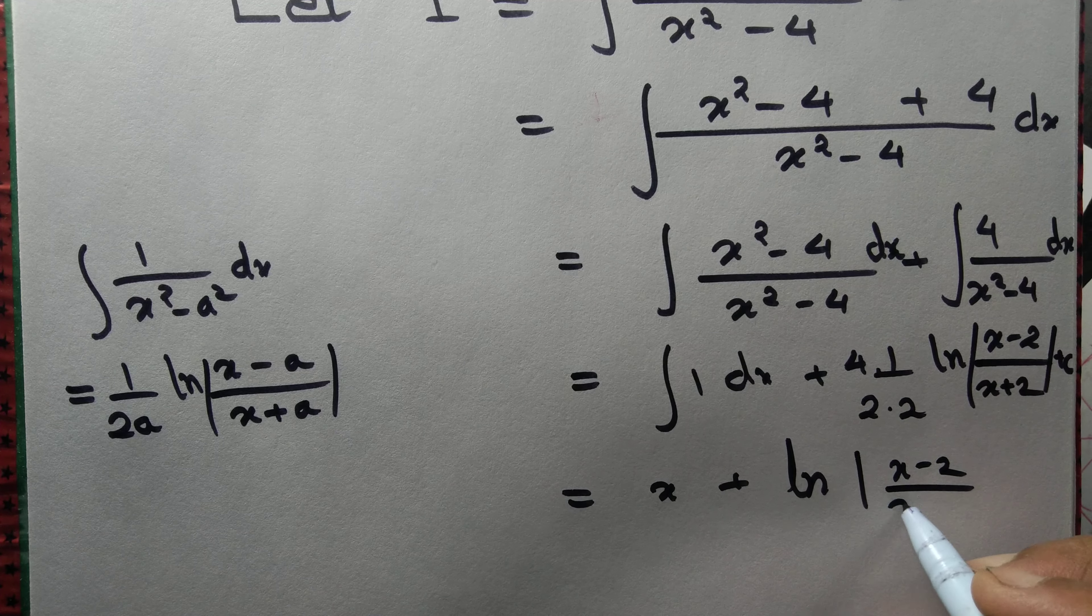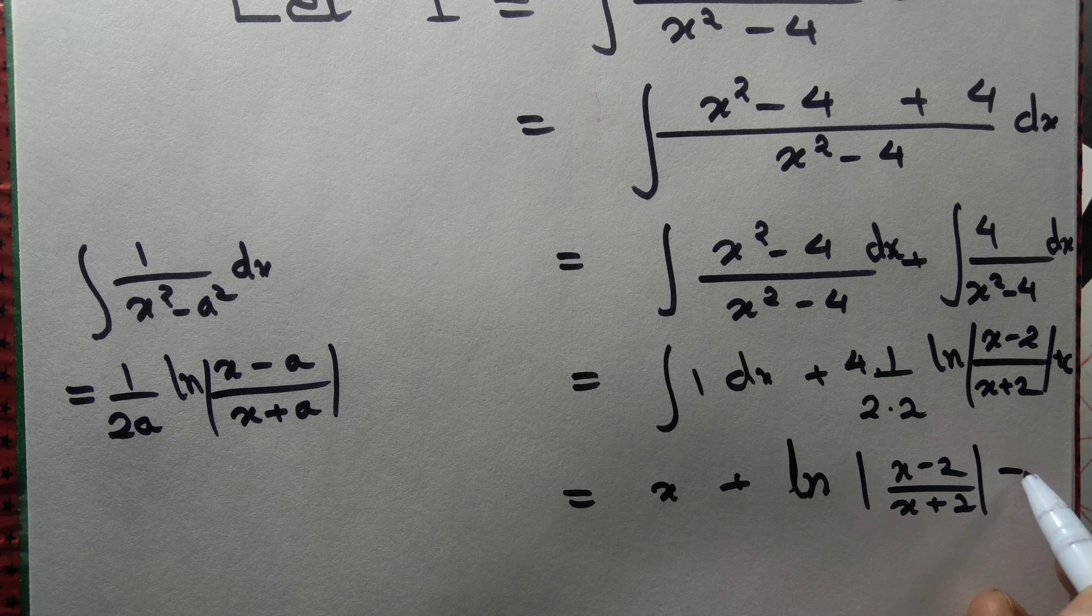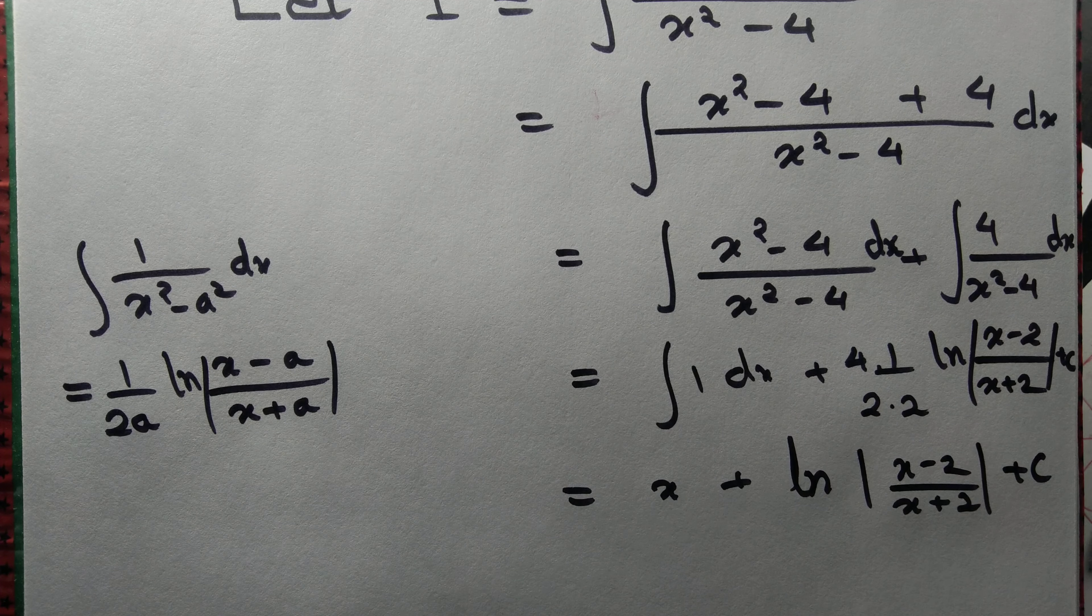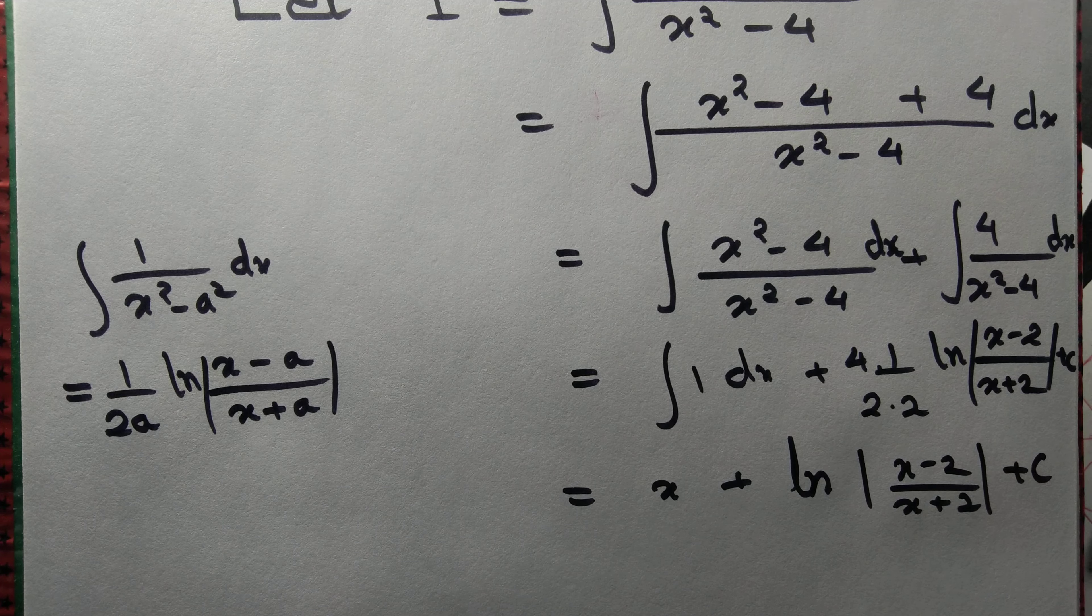So 1 by 2 into 2 ln of x minus 2 by x plus 2 plus some constant. Integral of 1 dx is x.